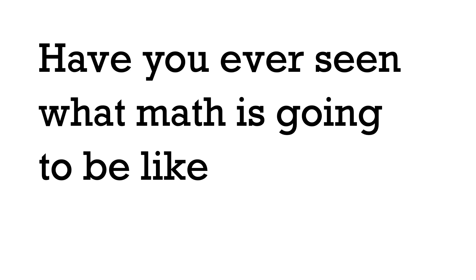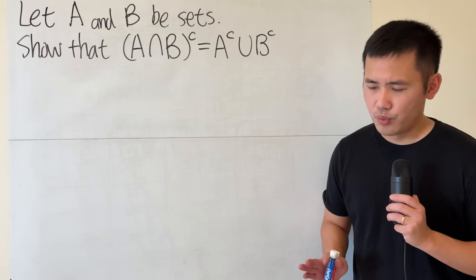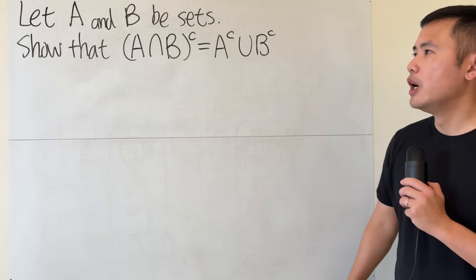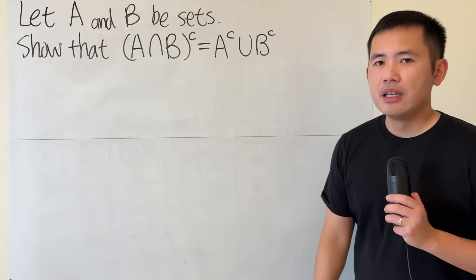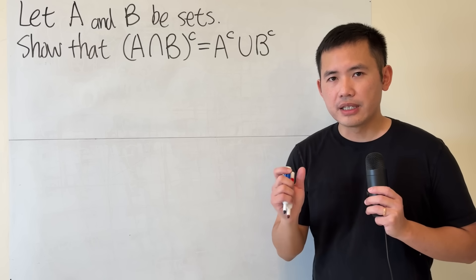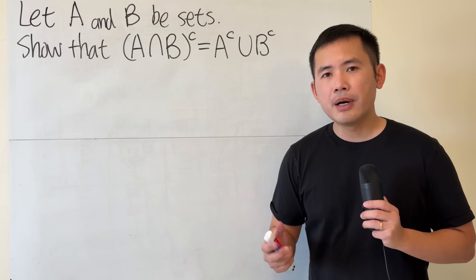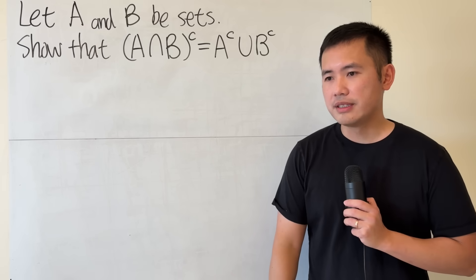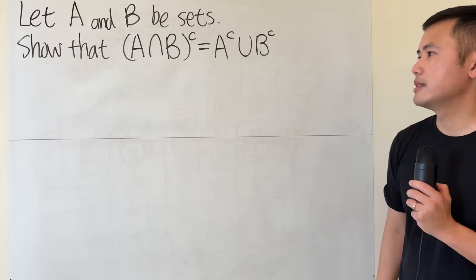Have you ever seen what math is going to be like when there are no numbers? If you haven't, don't worry, because I got this for you. Right here we have: let a and b be sets. First, a set is just a collection of objects. You can think about a set of the first 10 prime numbers, or the set of all the positive integers. Those are sets.